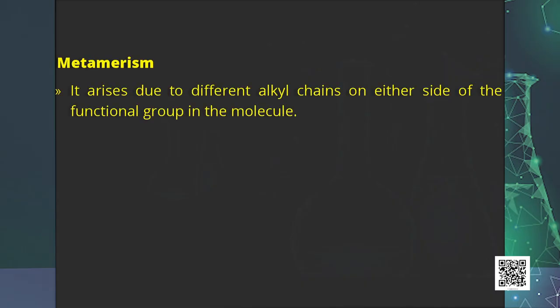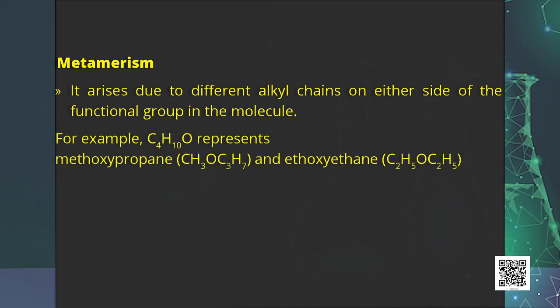The last type of structural isomerism is metamerism. It arises due to different alkyl chains on either side of the functional group in a molecule. For example, the organic compound C4H10O represents methoxypropane and ethoxyethane. That is all about structural isomerism.